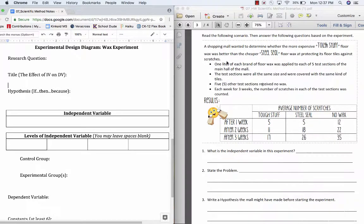In the story, there's a shopping mall that wanted to determine whether the more expensive Tough Stuff floor wax was better than the cheaper Steel Seal floor wax at protecting its floor tiles against scratches. To figure out which one was better, the mall experimenter took one liter of each brand of floor wax and applied it to each of five test sections of the main hallway in the mall. The test sections were all the same size and were covered with the same kind of tiles. Five other test sections received no wax. Each week for three weeks, the number of scratches in each of the test sections was counted, and here are the results after the first, second, and third week.